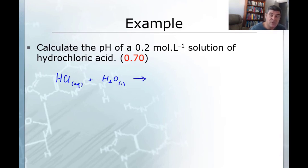And in fact, we don't really need to draw an equilibrium arrow here because we know that hydrochloric acid is a very strong acid. So we're going to get our H3O plus, our hydronium ions, and we're going to get our chloride ions.